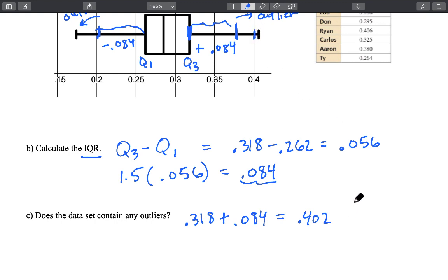And we know we have a data point of 0.406. That was our maximum one. So here's our outlier on the upper end.